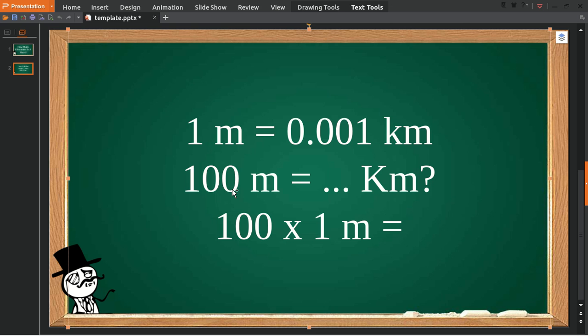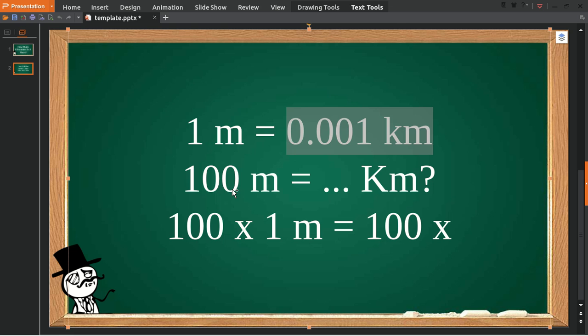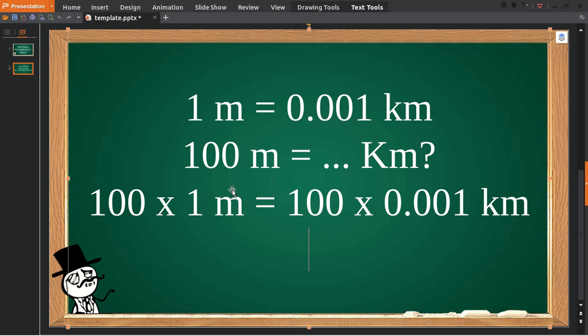Because you have 100 on the left, then you must have 100 on the right as well. And then we multiply it with this number. So 100 meters is equal to... that's zero to zero, then...